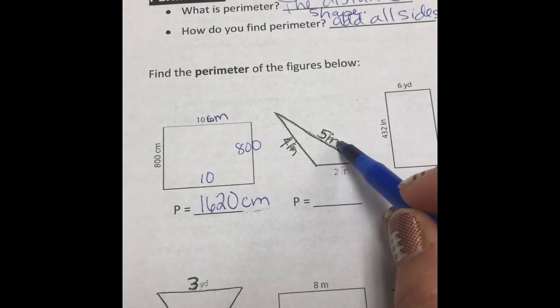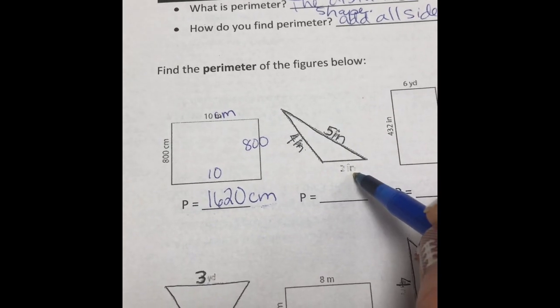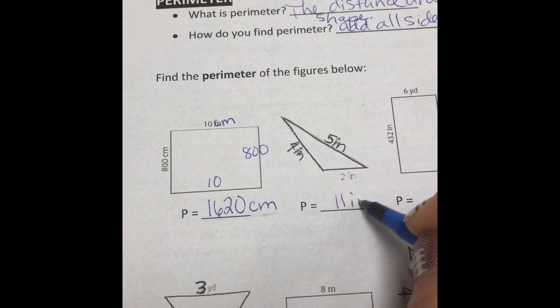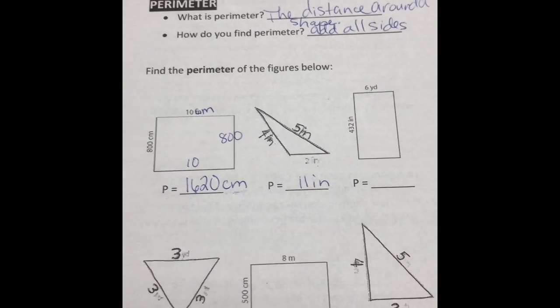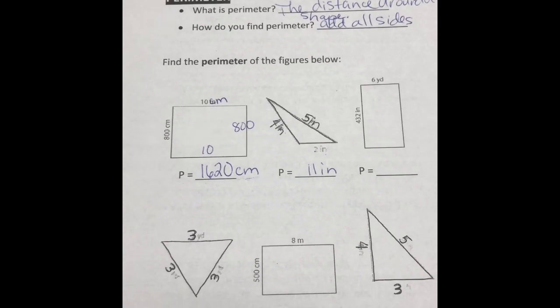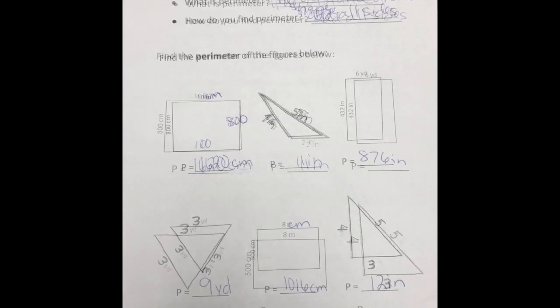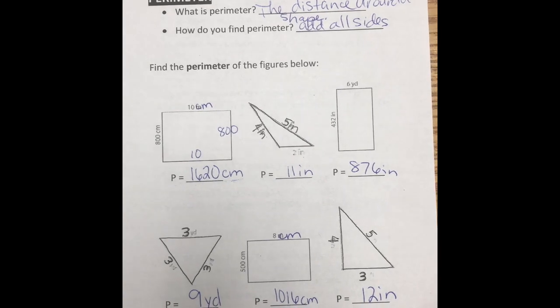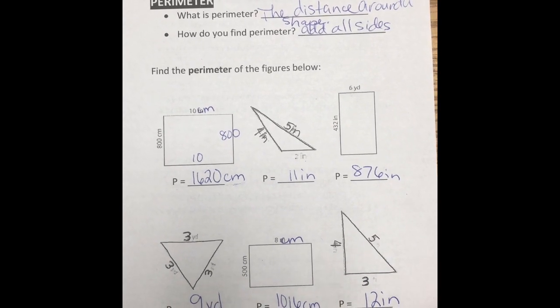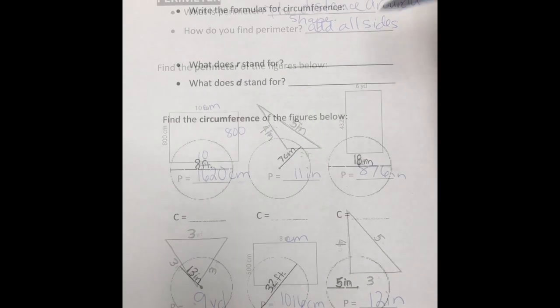On the next one, we would do 5 plus 4 plus 2, which gives us 11. And you're going to continue on with that. Pause the video, solve all of those, and then come back, and we'll check. So those should be the answers that you came up with. Double check yours with mine. Make sure they're all right, and then we'll move on to the inside.